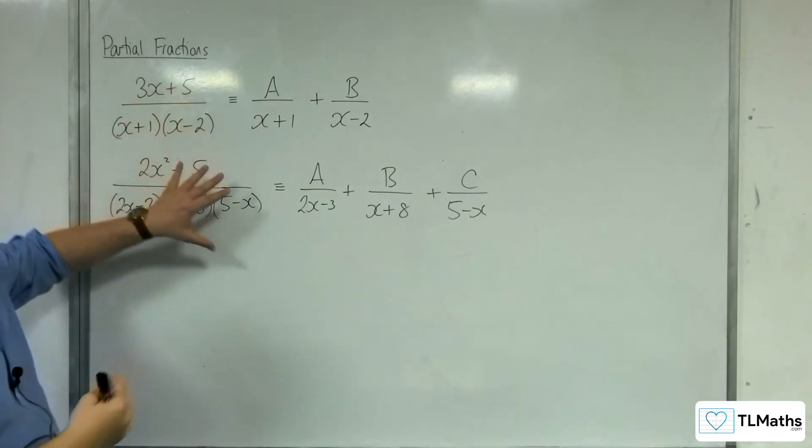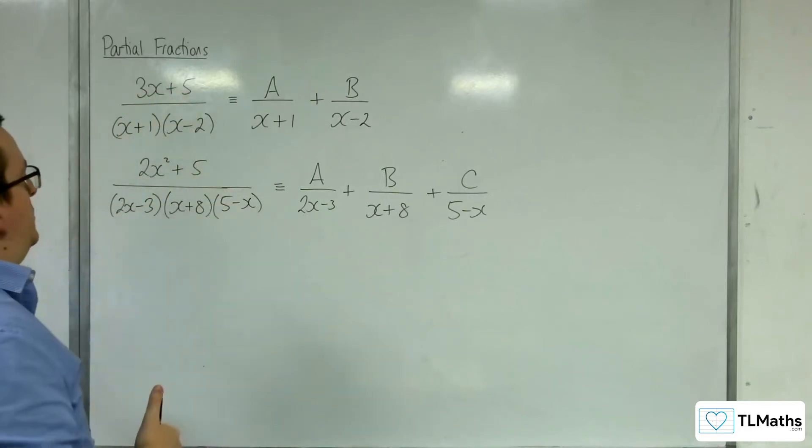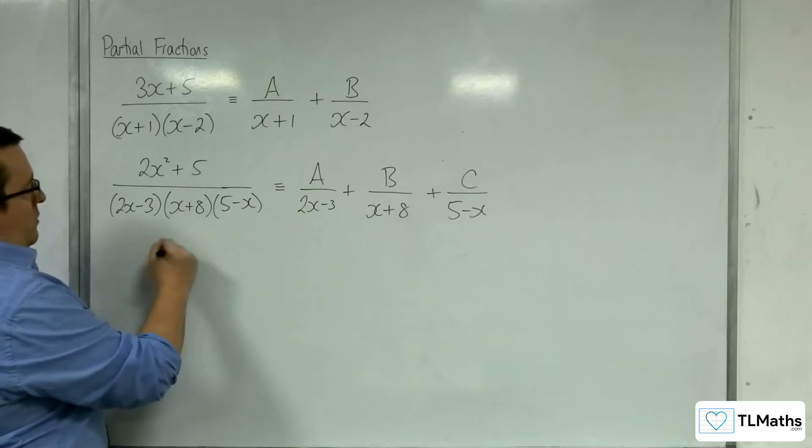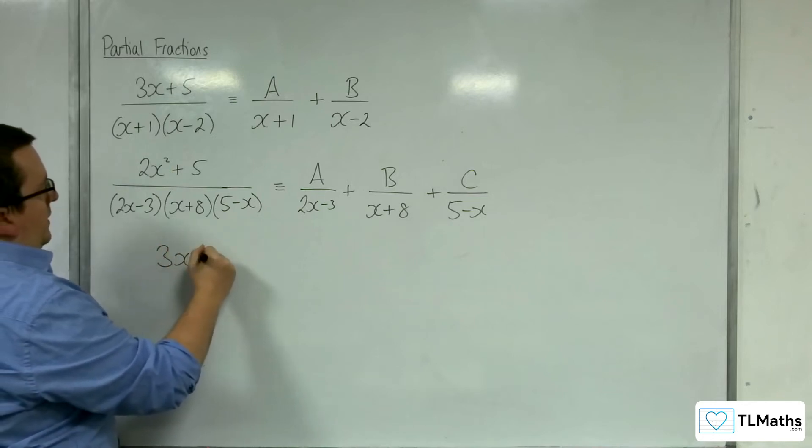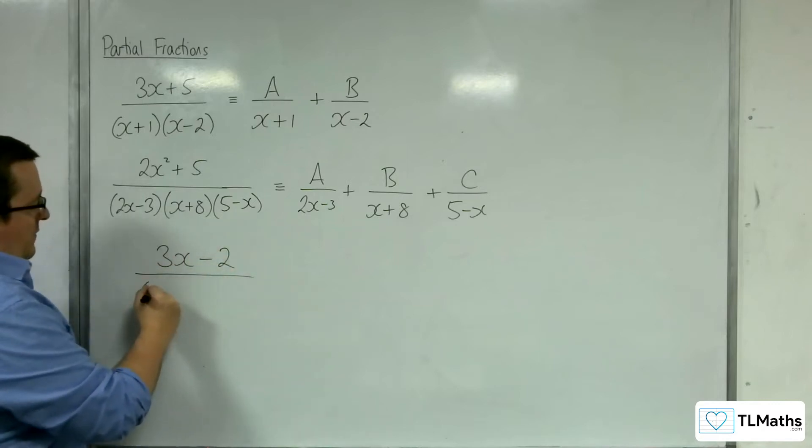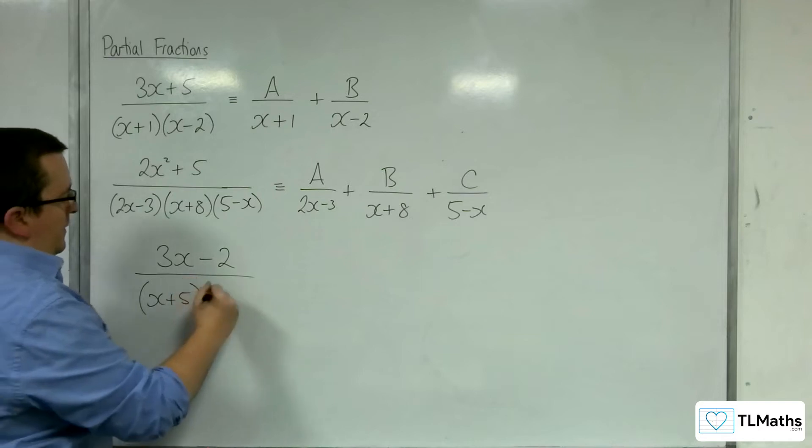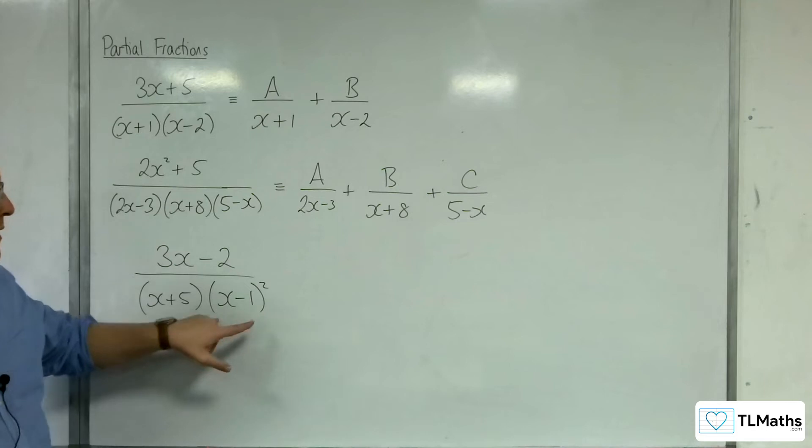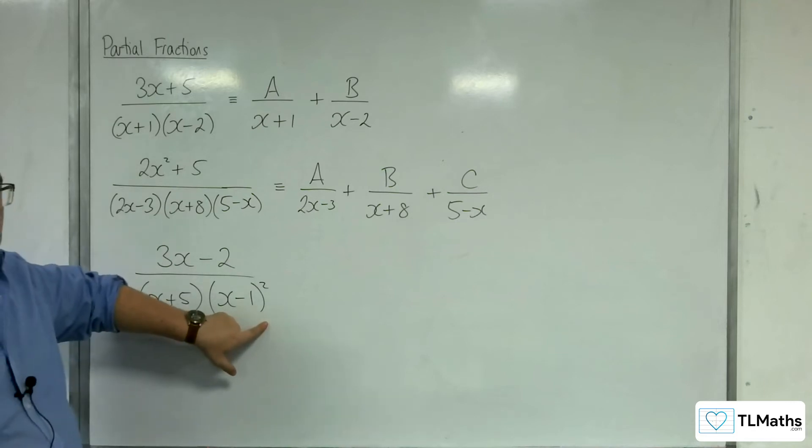Now, they are the first two types. The third type that I would expect you to have met would be something like this, where you've got maybe 3x-2 over (x+5)(x-1)². So one of the linear terms in the denominator is squared, and knowing how to deal with that.